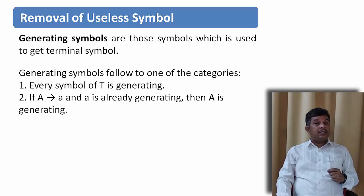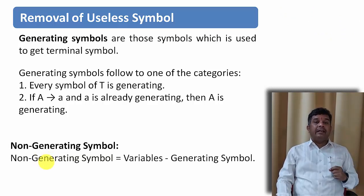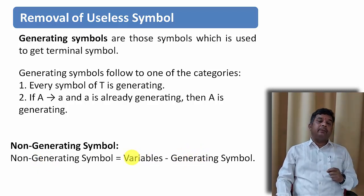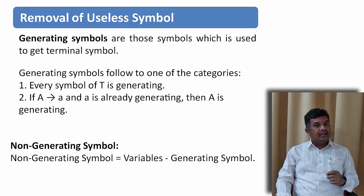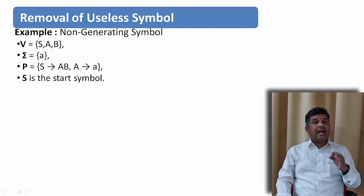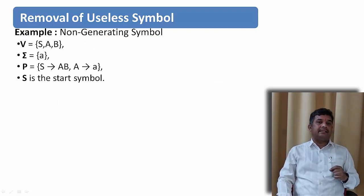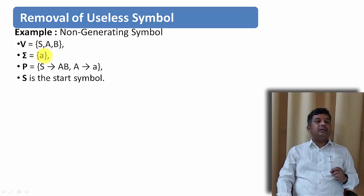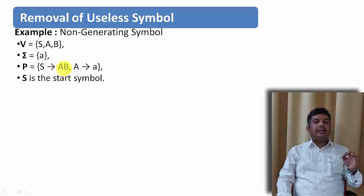How can we find a non-generating symbol? The non-generating symbols are obtained by subtracting generating symbols from the set of variables given in the grammar. Let us understand this with an example. Every grammar is defined in terms of V, T, P, and S. Here V is the set of variables: S, A, and B. The terminal symbol is 'a', and the productions are S derives AB and A derives a, where S is the starting symbol.